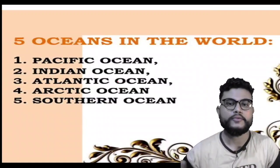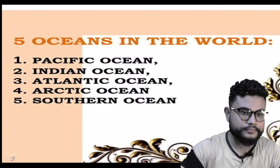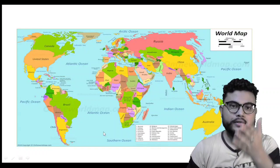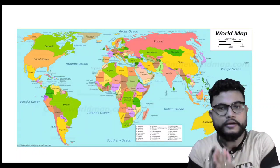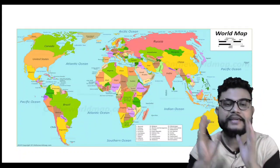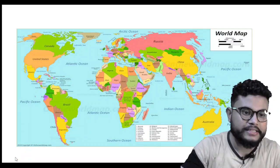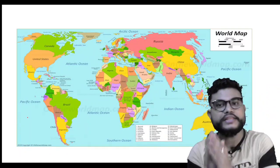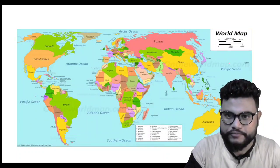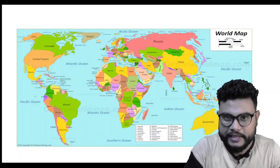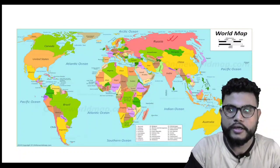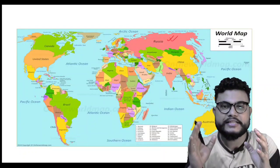Here is the world map, and here we can easily understand about different oceans and their locations clearly. Your concept of oceans will be completely clear. First of all we will talk about Pacific Ocean. This large country here is Russia — it is the world's largest country.